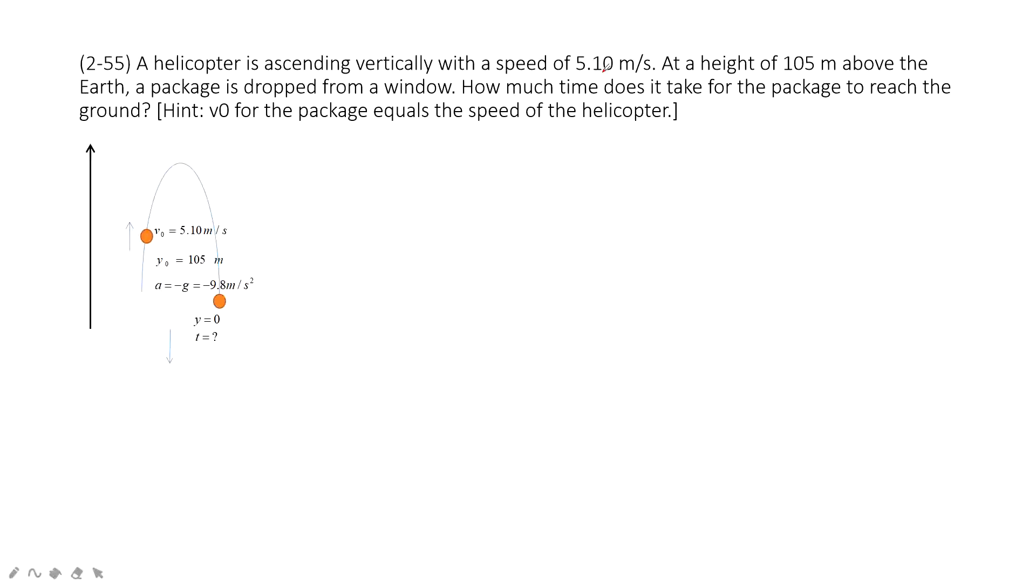They tell you there is a helicopter and it's ascending vertically with a speed of 5.1 m per second. The initial velocity is up 5.1 m per second. So we choose the positive direction as up. And it tells us at the height of 105 m above the Earth.